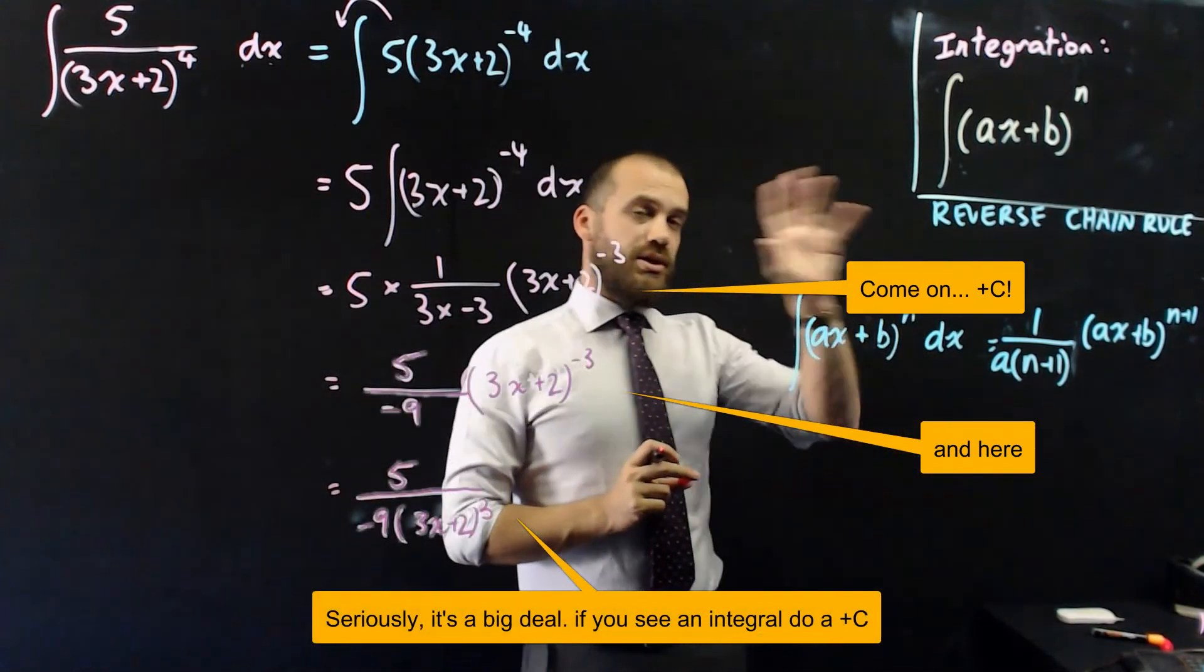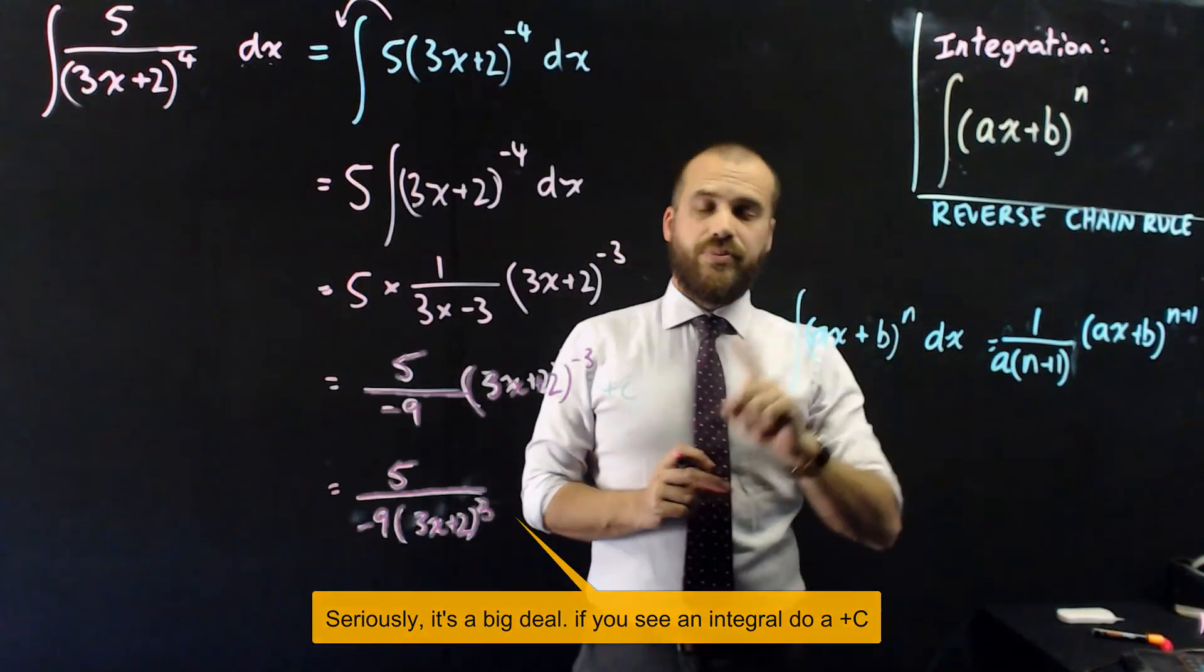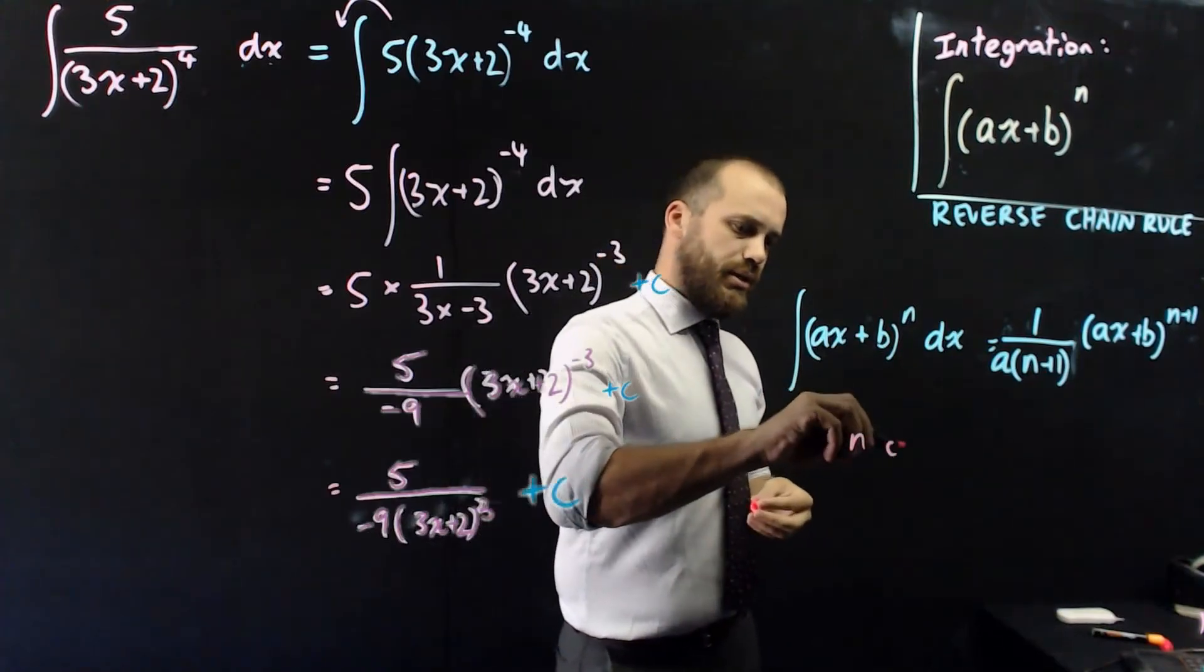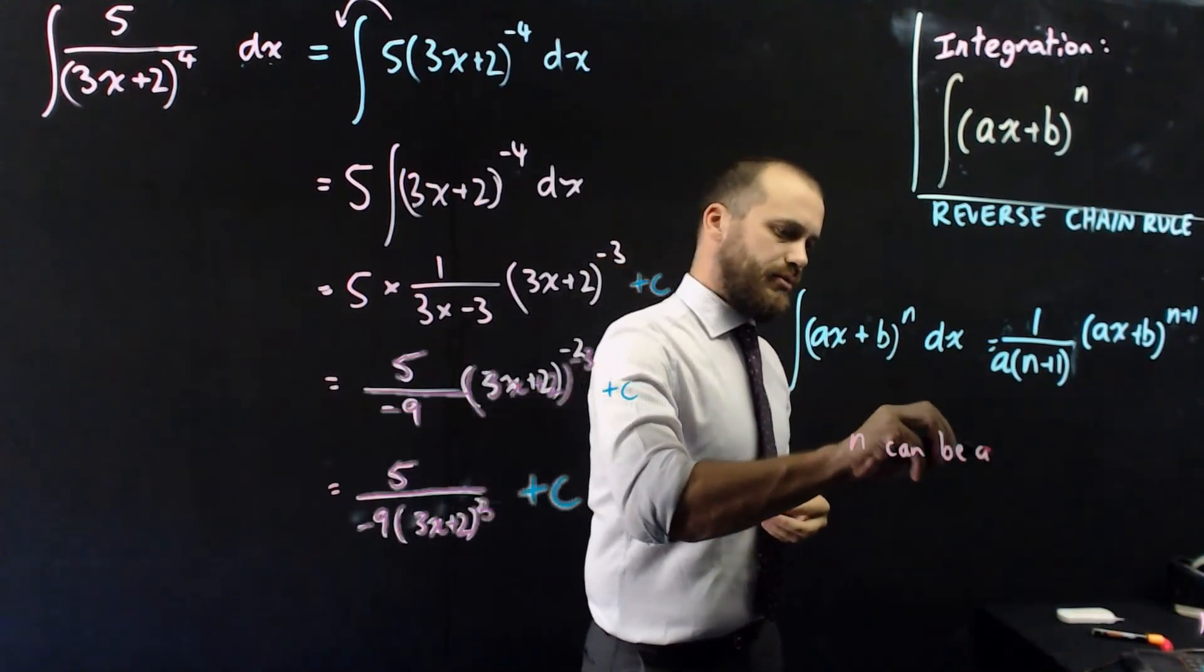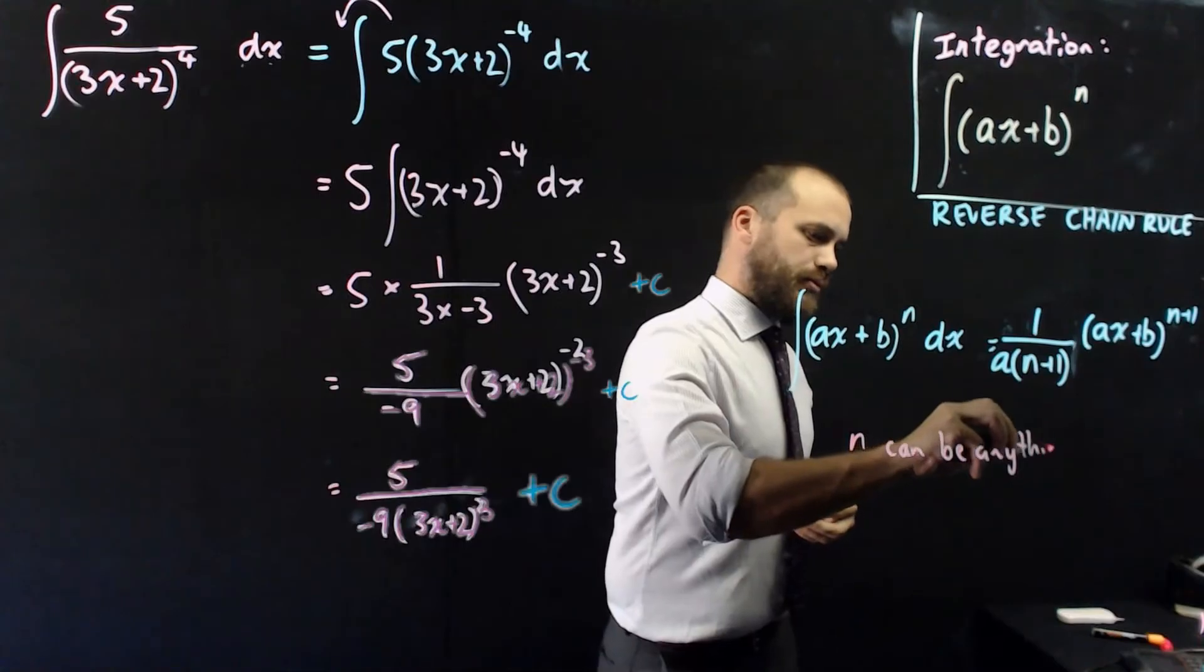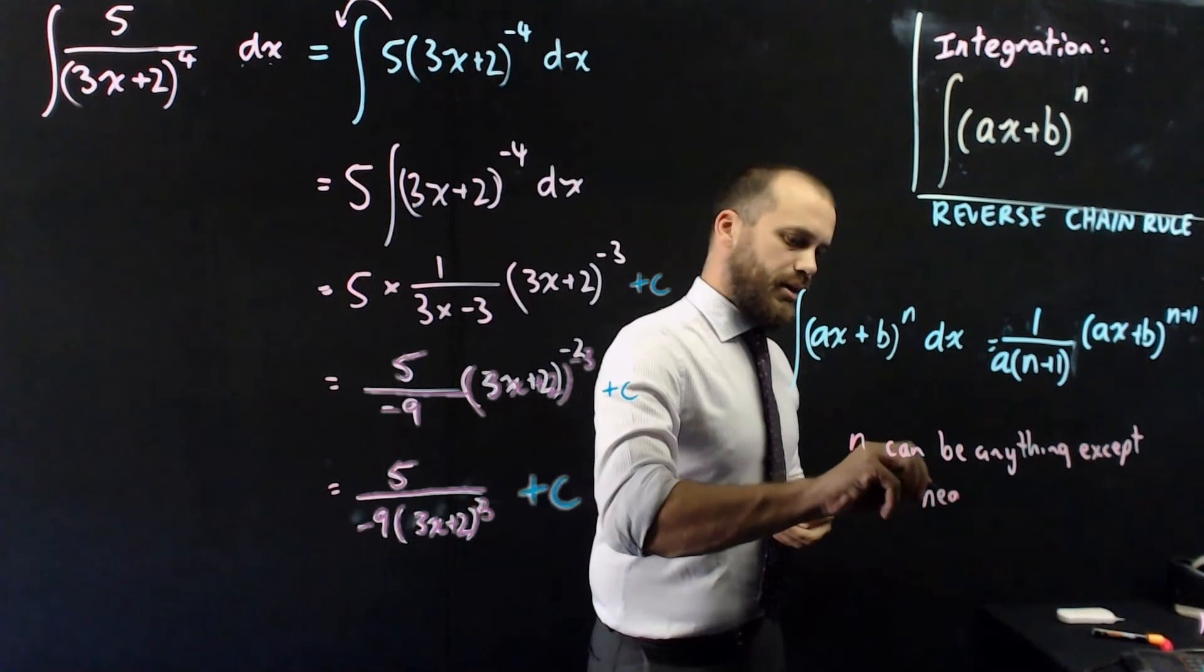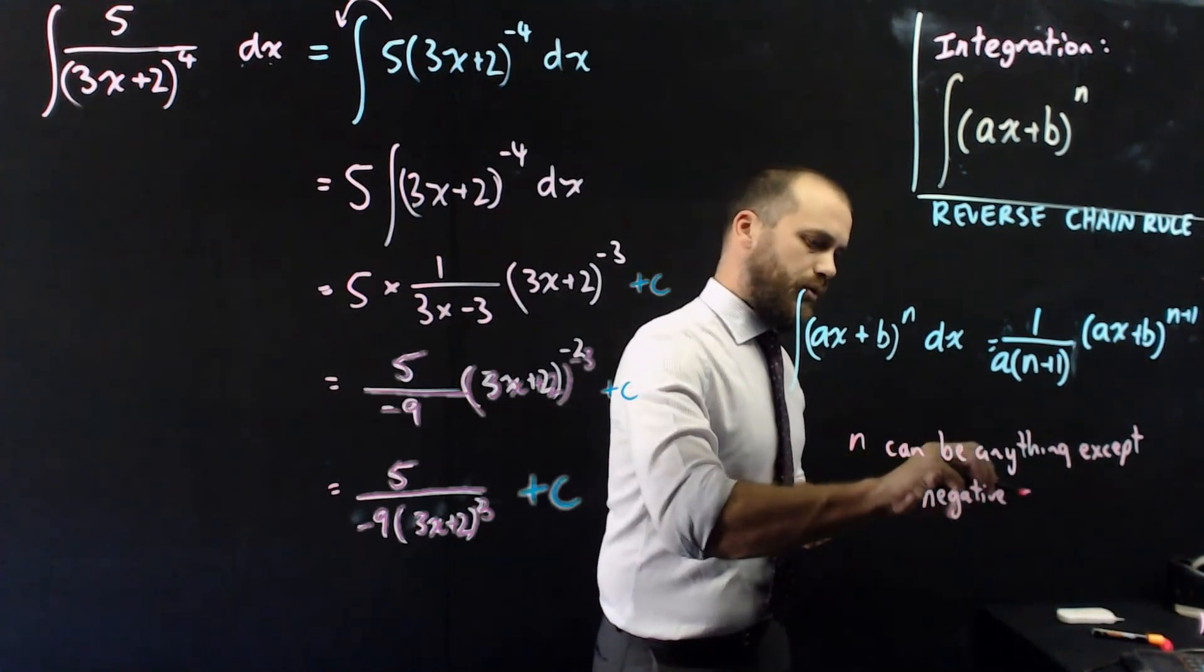Okay, that's the integral of ax plus b to the n. One last thing I want to say about this. n can be anything except negative 1.